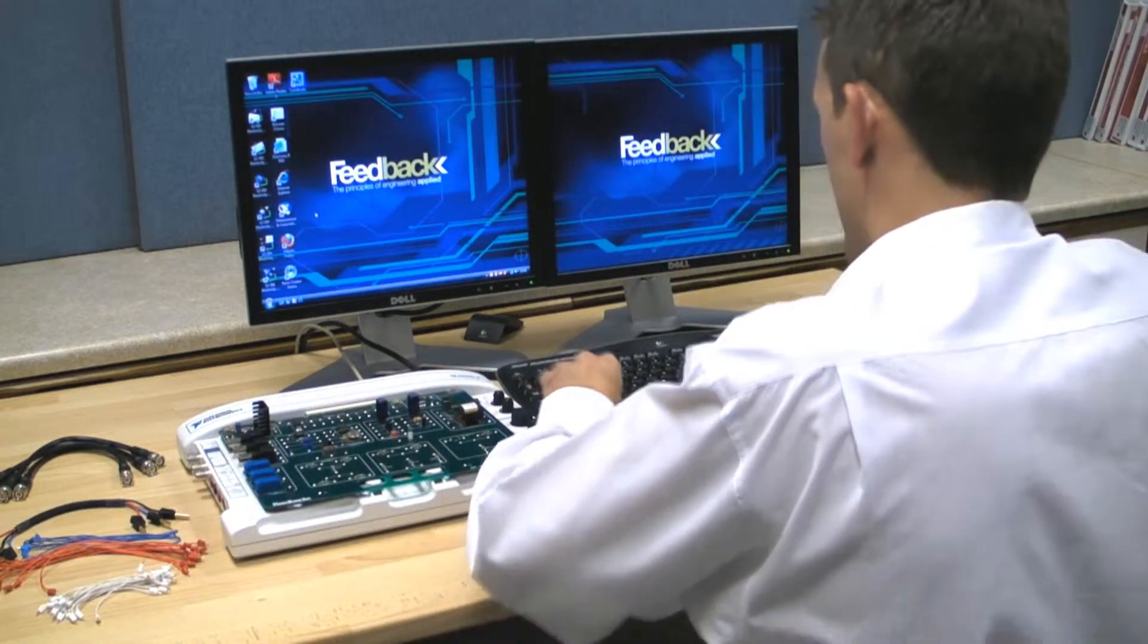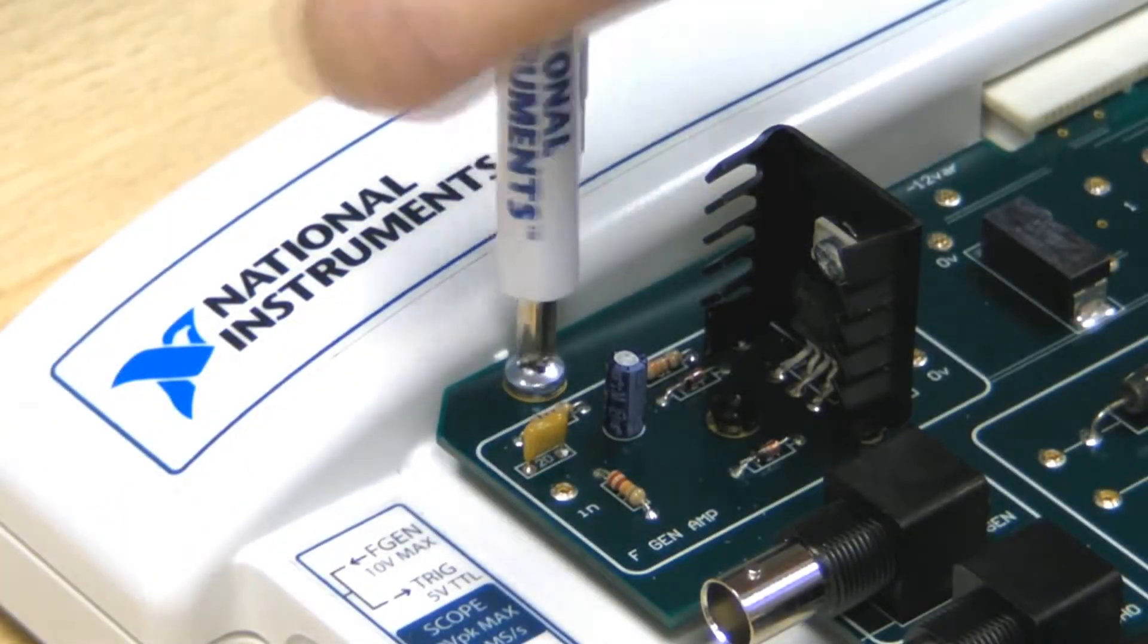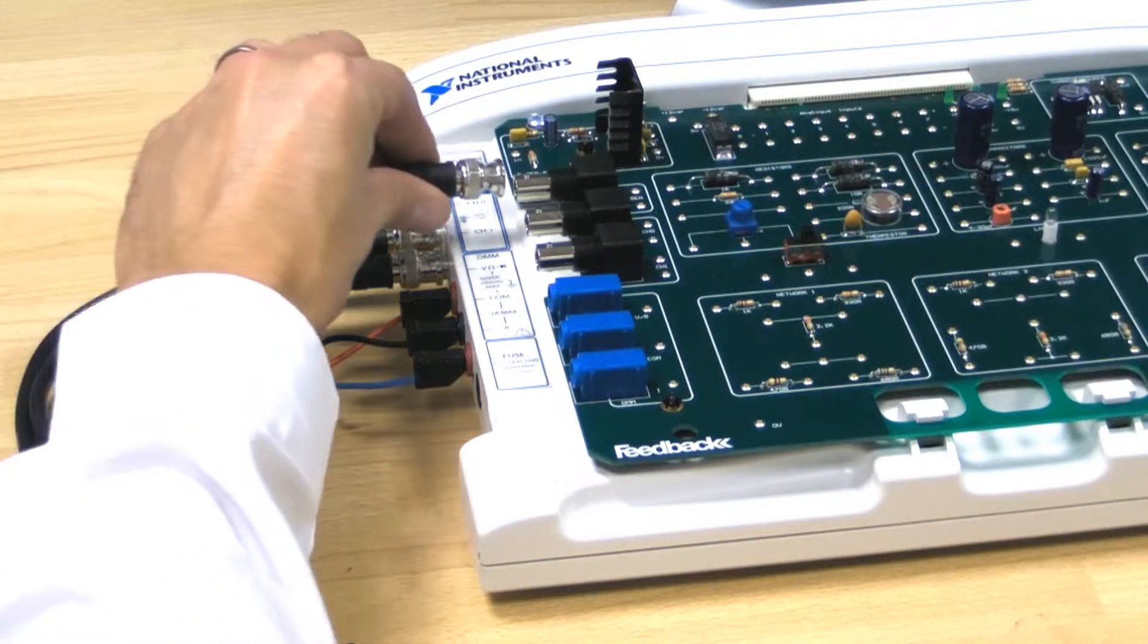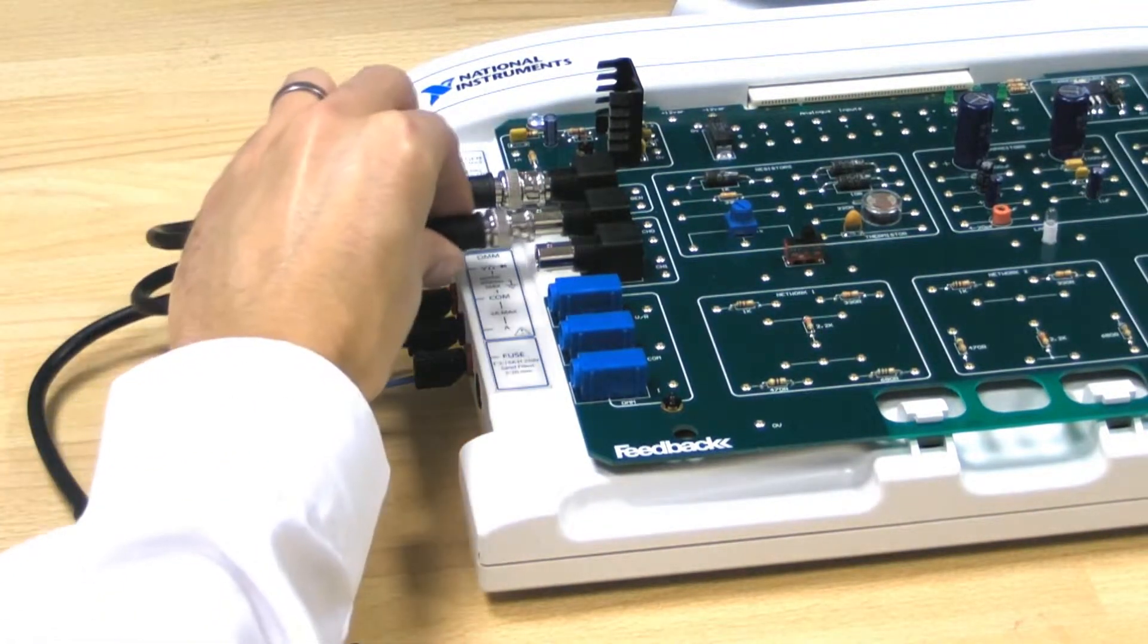The boards are fitted to the NI Elvis Console in the same manner as the original prototyping board. The oscilloscope and multimeter connections are made.